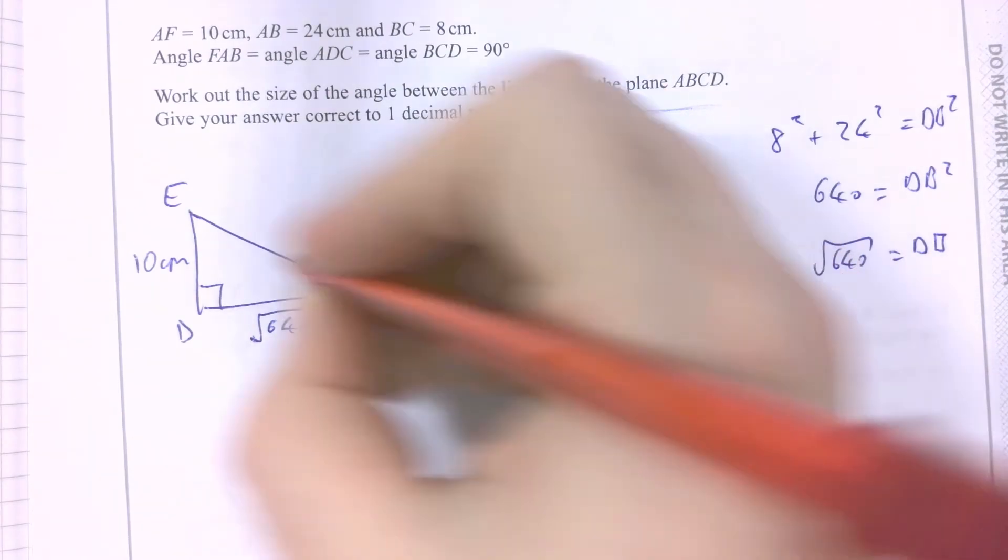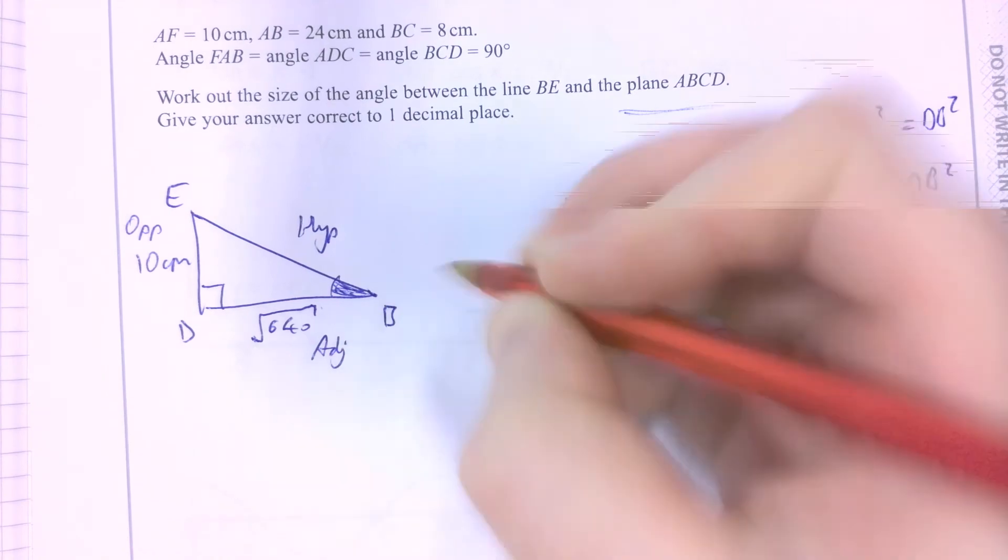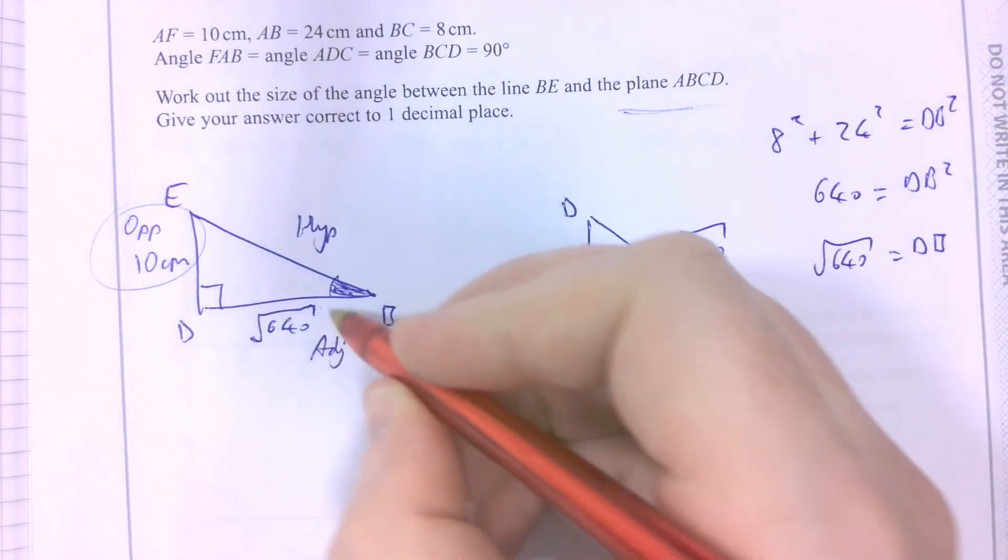Requires a SOH CAH TOA trig. So that's the opposite. Here's the hypotenuse. Here's the adjacent. We have the opposite. We have the adjacent.